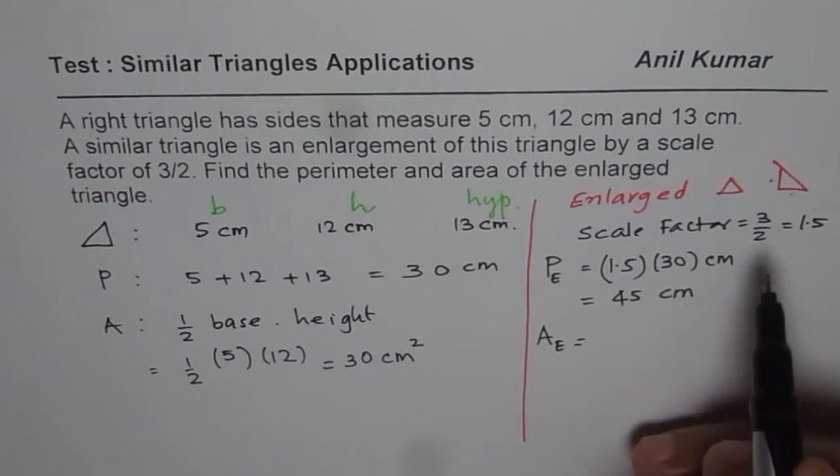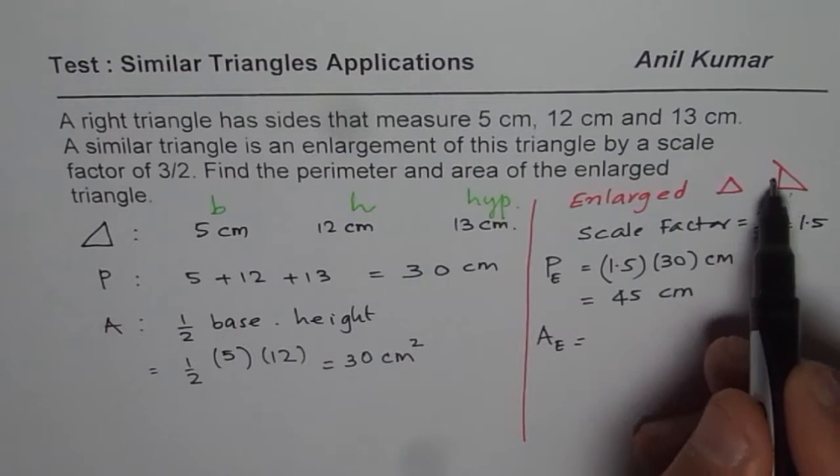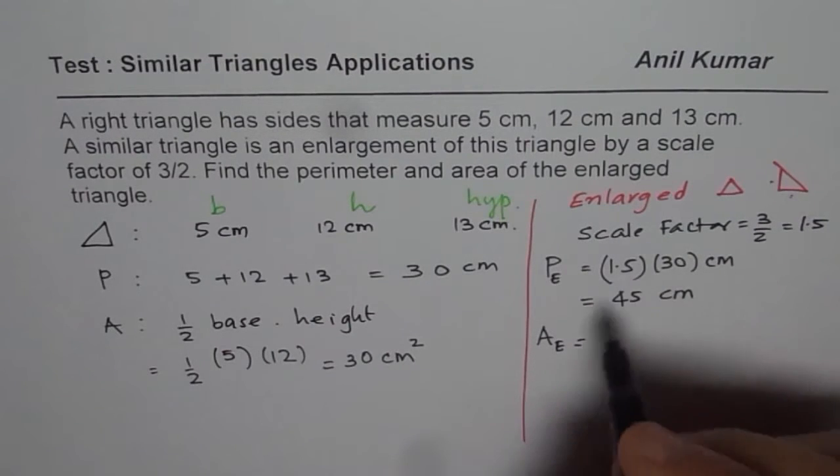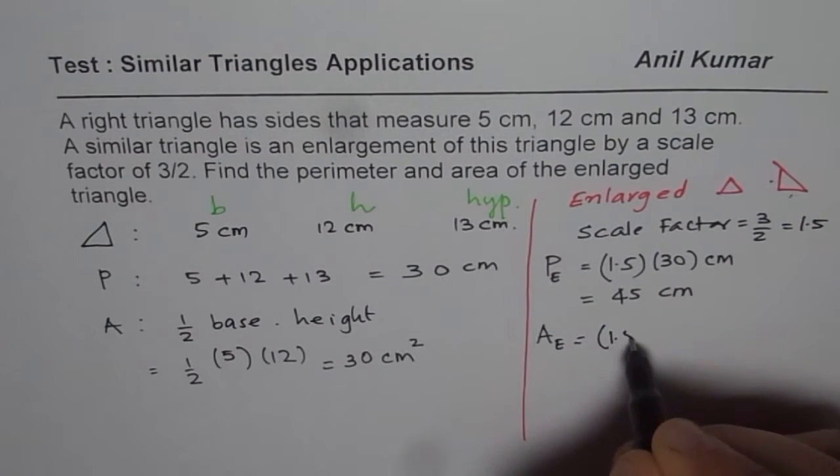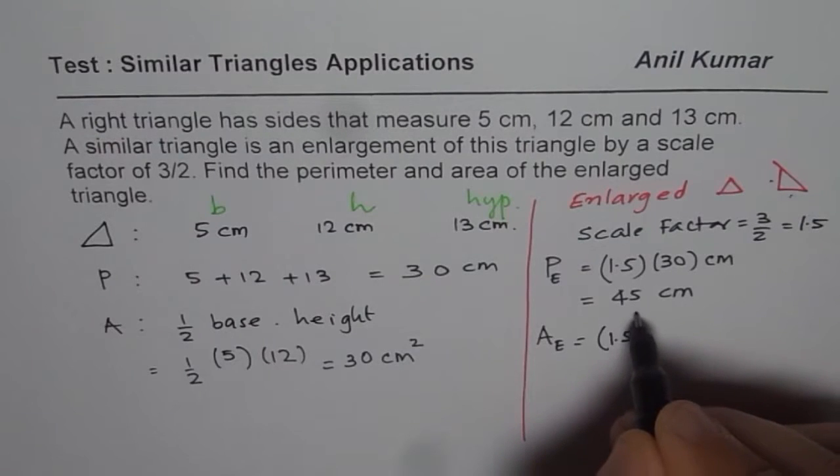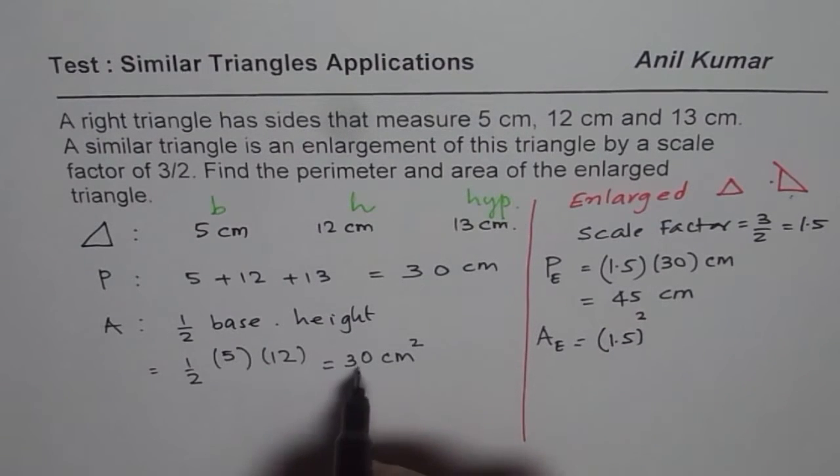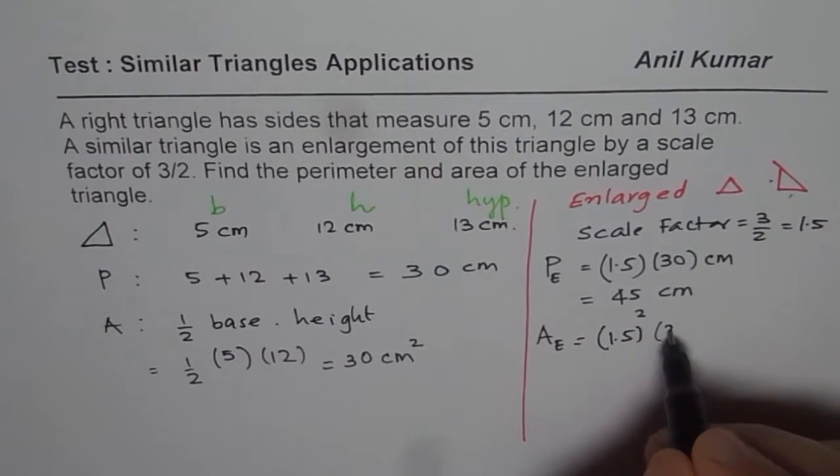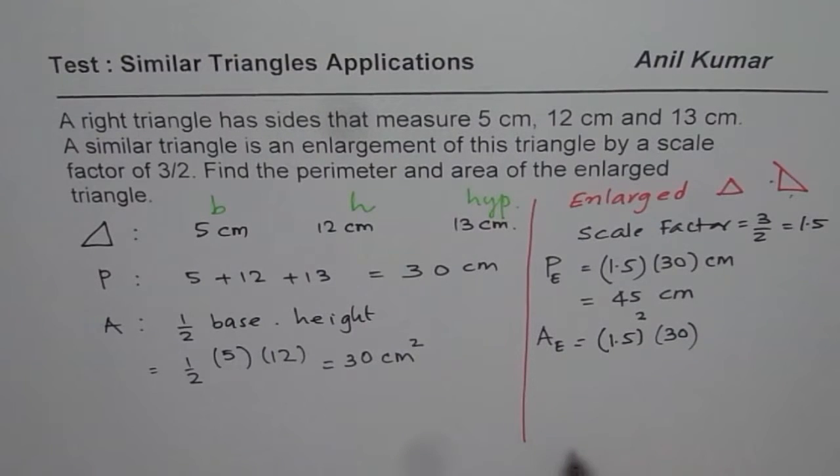Each side is multiplied by 1.5. So when you multiply two sides, you get 1.5 square. So area gets multiplied by the square of the scale factor. So it will be square of, and the area original is 30. Do you see that? So that 30 gets multiplied by 1.5 square.